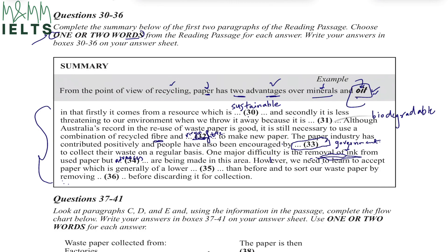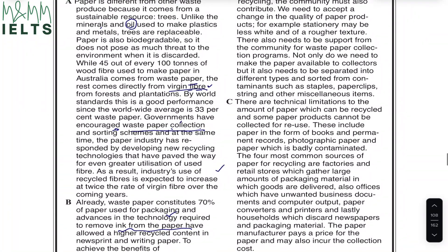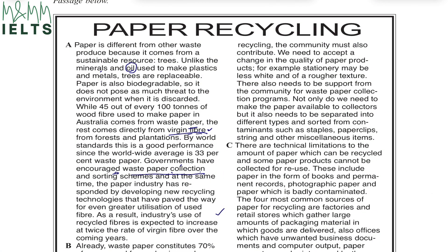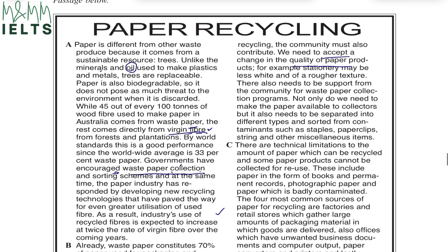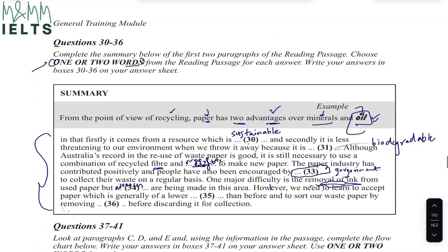Question 35 says: however, we need to learn to accept paper which is generally of a lower dash than before. Going back to the paragraph: to achieve the benefits of recycling, the community must also contribute. We need to accept a change in the quality of paper products — for example, stationary may be less white and of a tougher texture. So we have to accept that a lower quality will result. The word 'lower' is already given in the blank, so the answer for number 35 is 'quality.'